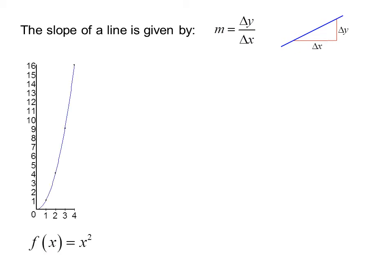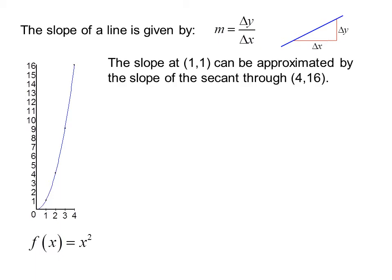Consider the function f(x) equals x squared. The slope at (1,1) can be approximated by the slope of the secant through (4,16). Delta y over delta x is (16 minus 1) over (4 minus 1), which is 15 thirds or 5.